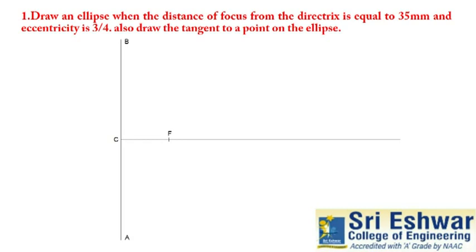If they gave this eccentricity 3 by 4, if it is less than 1 then it will be ellipse. If it is equal to 1, it is parabola. If it is greater than 1, it is hyperbola.